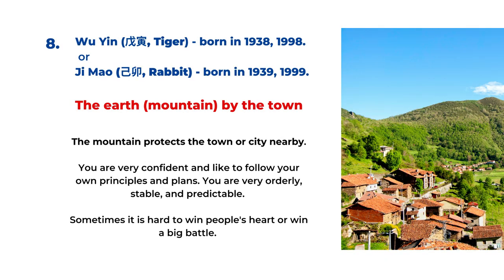The eighth type is for the Wu Yin year and Ji Mao year, for birth years 1938, 1939, 1998, and 1999. It's called the earth by the town, or the mountain by the town. In the old days, people liked to build their town next to the mountain for protection from enemies — the earth by the town carries that meaning. Your personality is more confident and you like to follow your own principles and plans. You are very orderly, stable, and predictable. The negative side is that it can sometimes be hard to motivate people or win people's hearts.